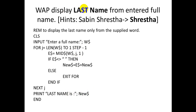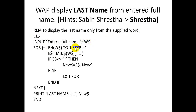Now, to display the last name from an entered full name — for example, if the input is 'Subin Sraster', the output should be 'Sraster'. CLS: INPUT 'Enter a full name'; w$, where w$ is the variable that will store the full name.